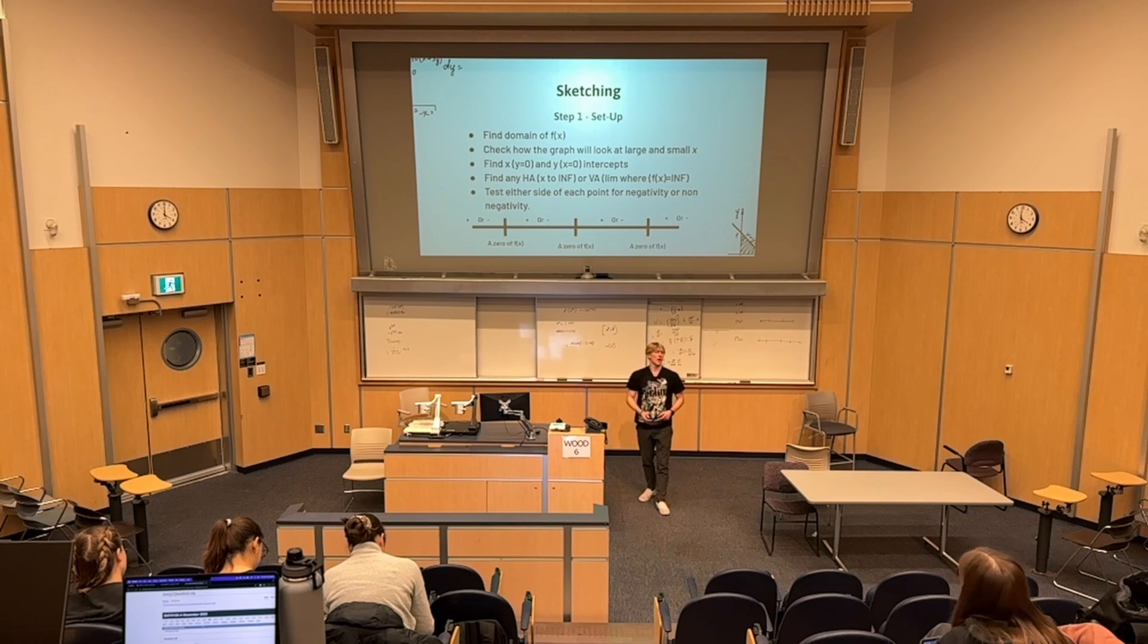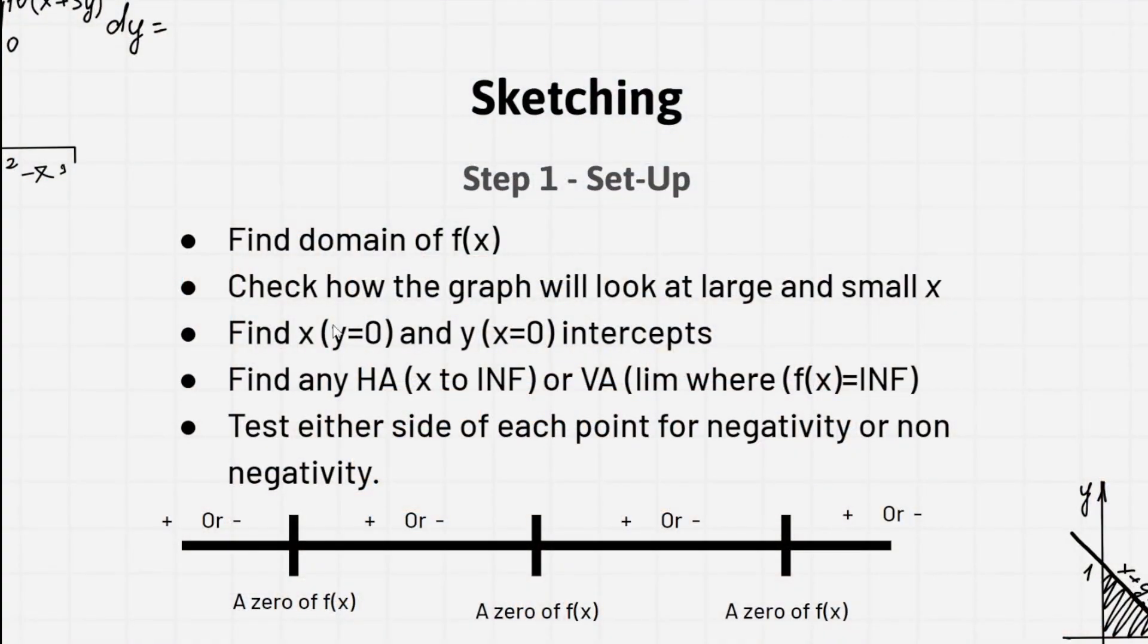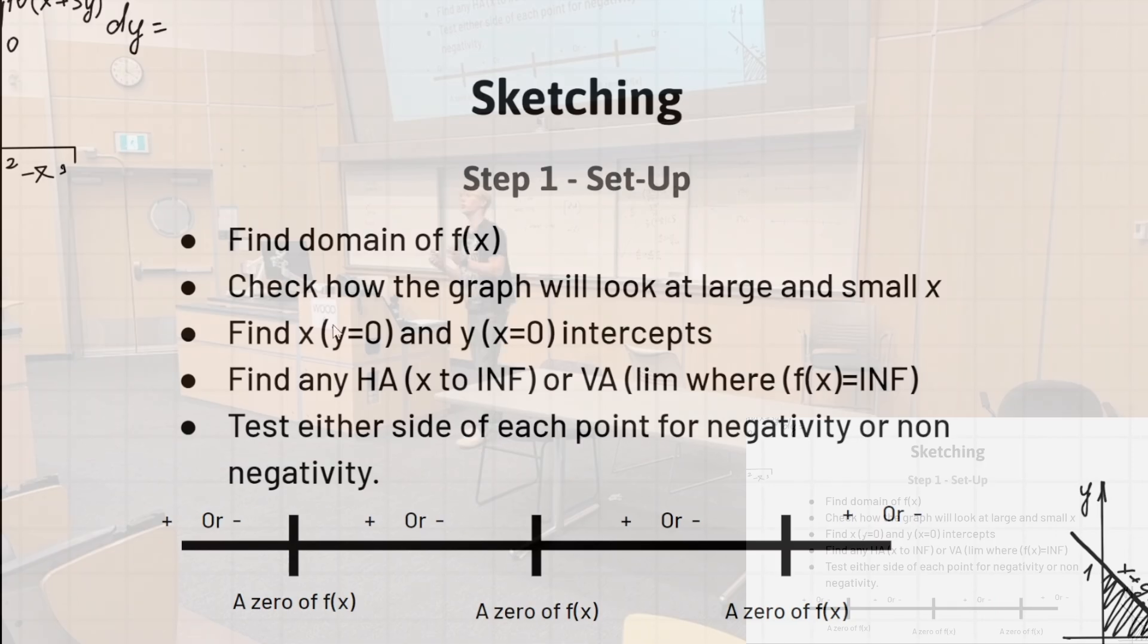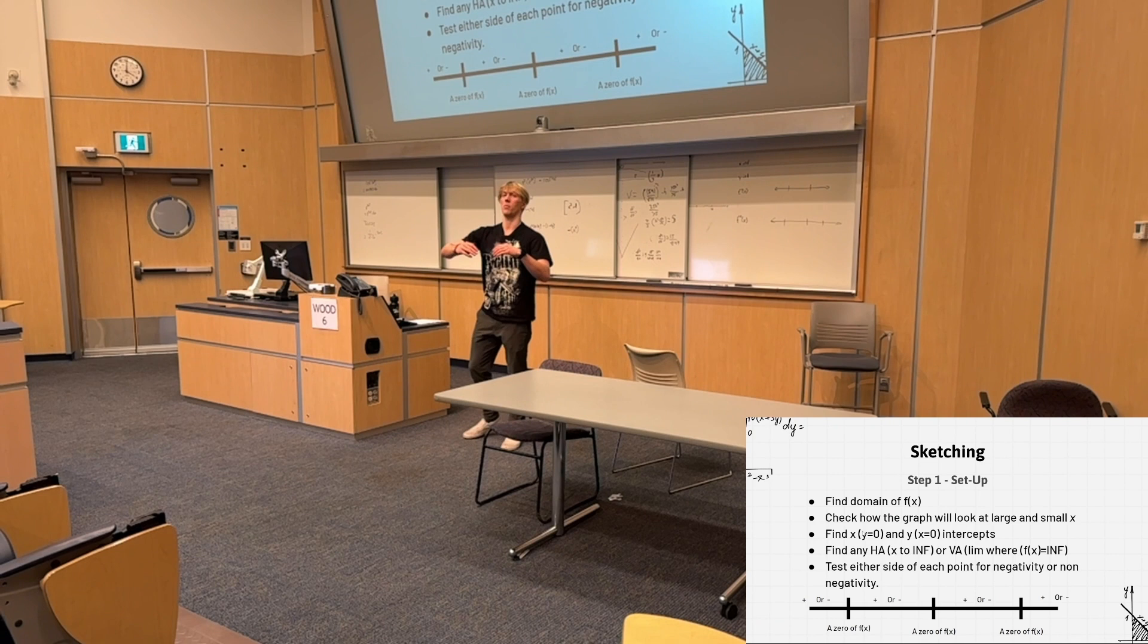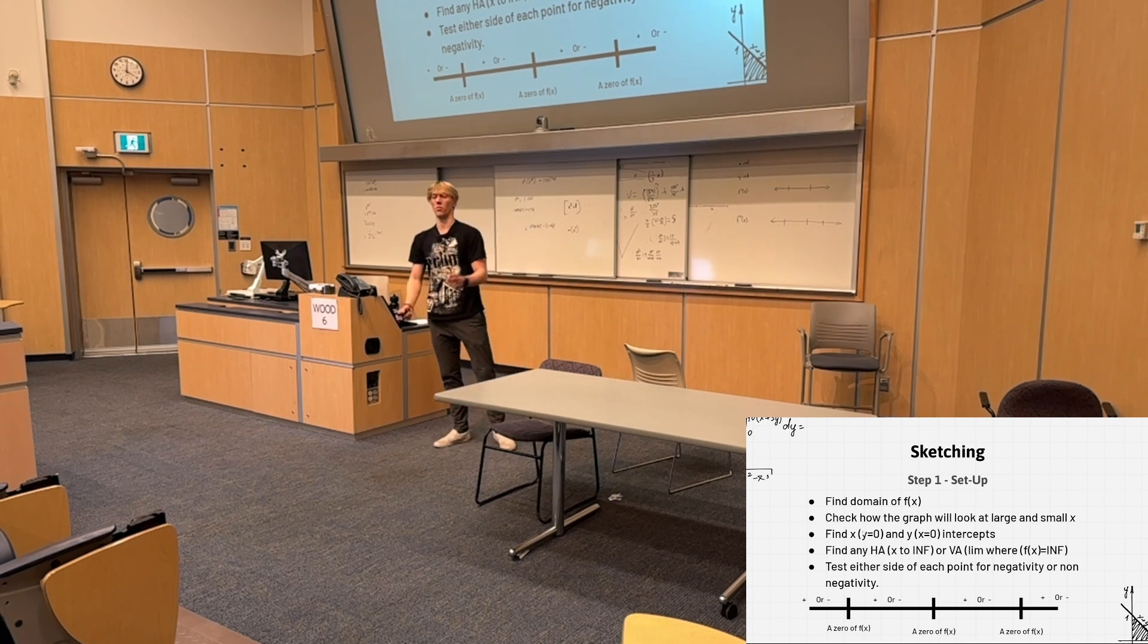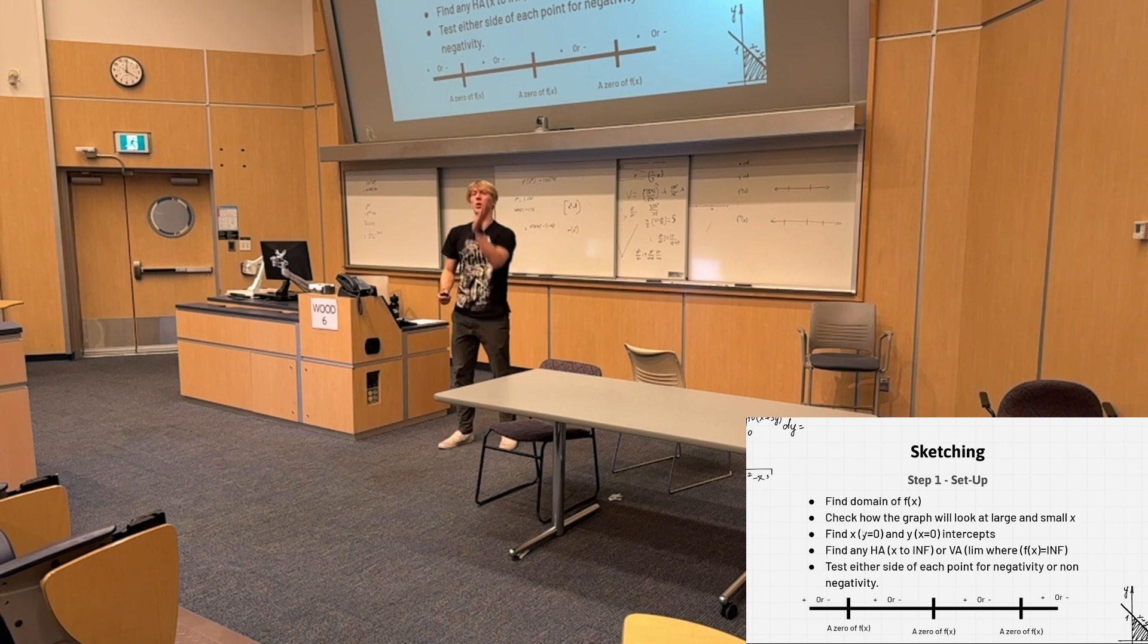After that, you find any horizontal asymptotes, which is when you take the limit as x goes to positive infinity or as x goes to negative infinity. Or vertical asymptotes, which is where the limit as x goes to something goes to infinity. So this is basically where the denominator would equal zero. But you'll do that with one-sided limits to understand whether it goes to positive infinity or negative infinity.